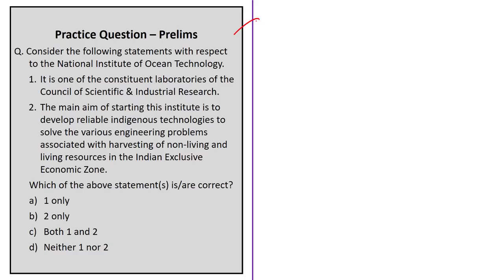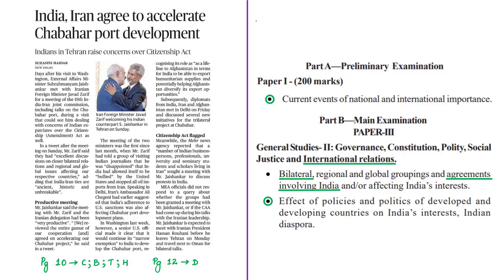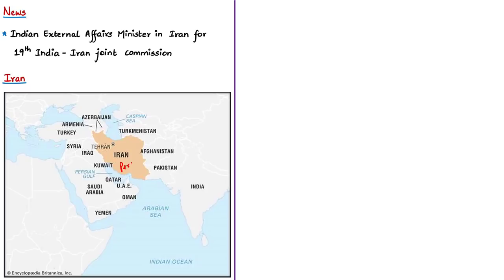This news article is about the recent visit of the External Affairs Minister of India to Iran for the 19th India-Iran Joint Commission talks, with discussions on Chabahar port expected to dominate the meeting. Iran, formerly known as Persia, is a country located in West Asia. It is surrounded by Azerbaijan, Armenia, and Turkmenistan in the north, and also by the Caspian Sea in the north. In the east it is surrounded by Pakistan and Afghanistan. To the south it is surrounded by the Persian Gulf and the Gulf of Oman, and to the west by countries such as Turkey and Iraq.